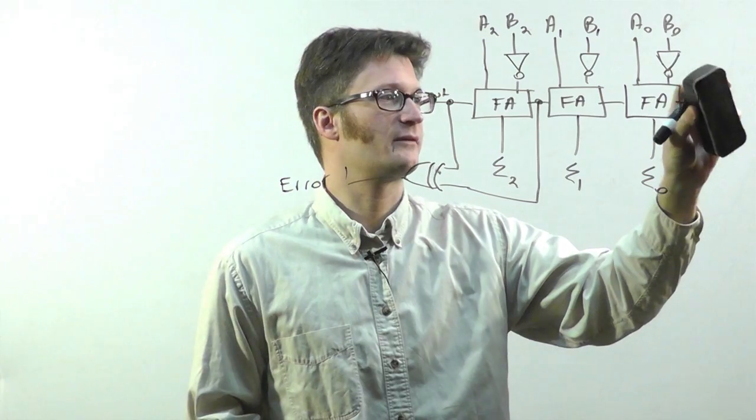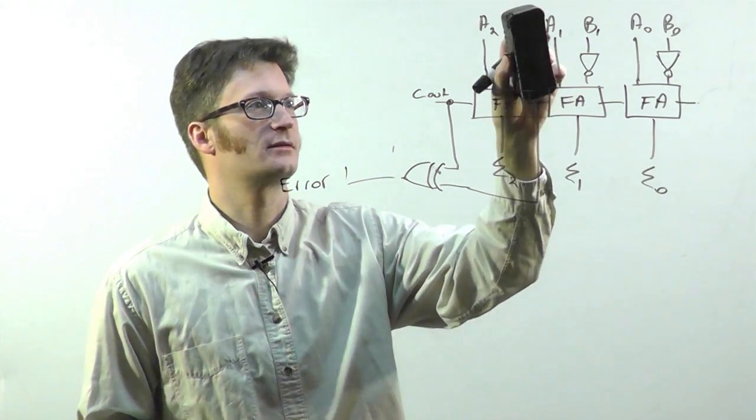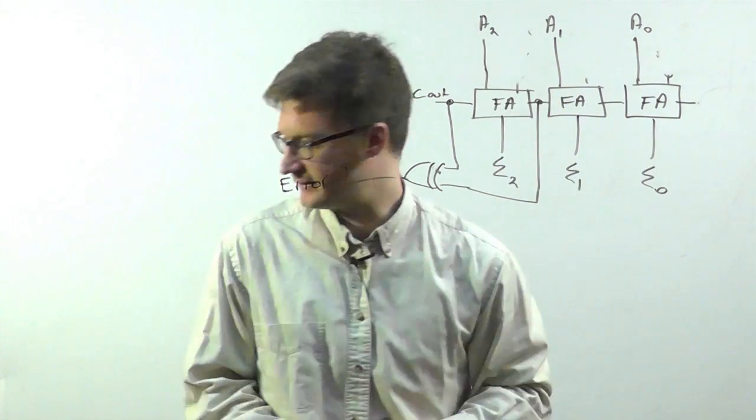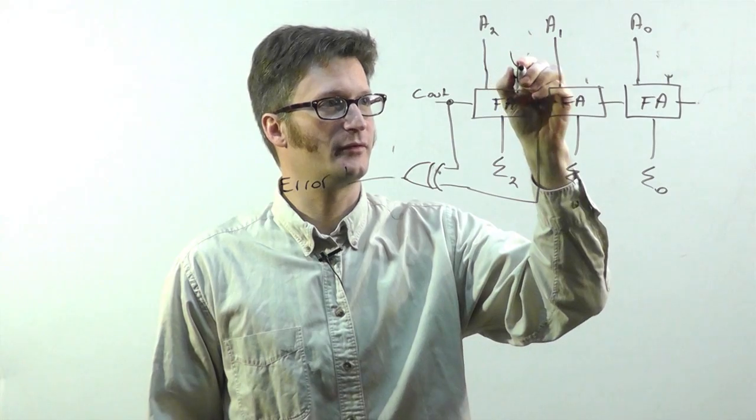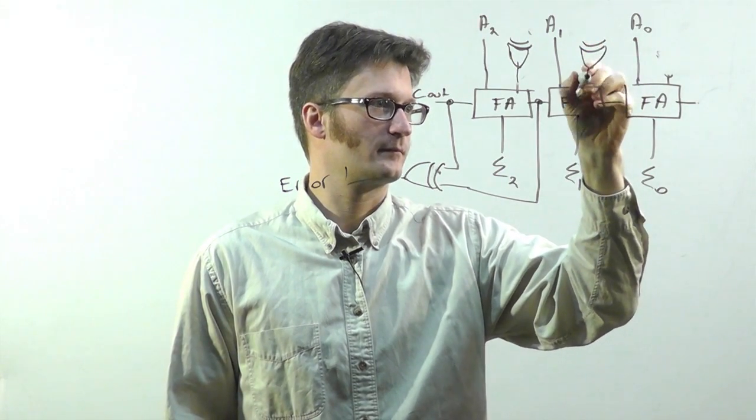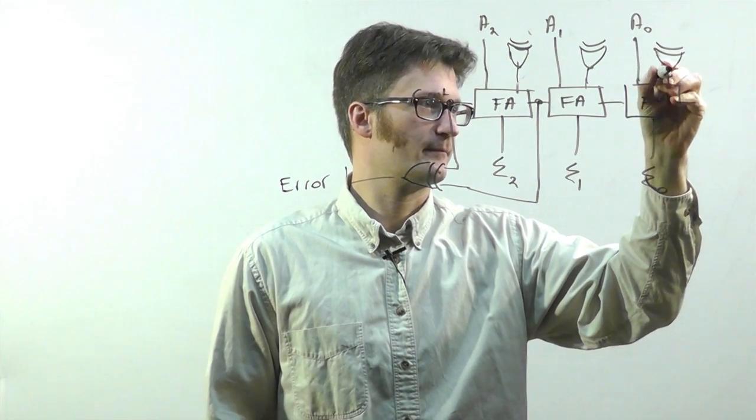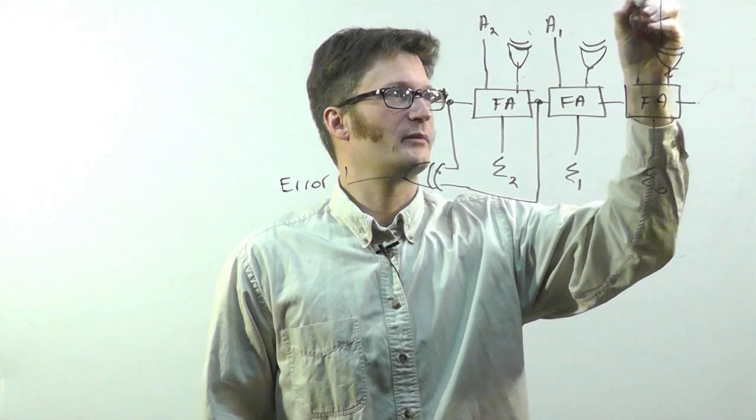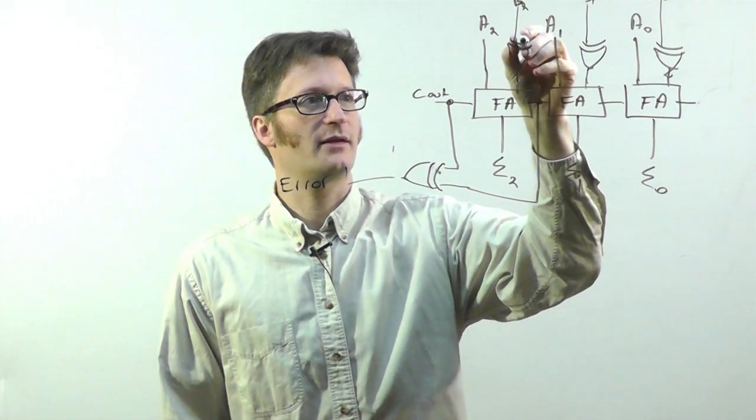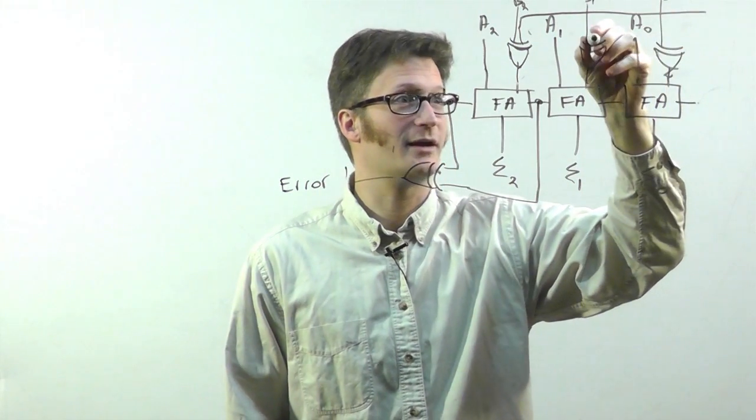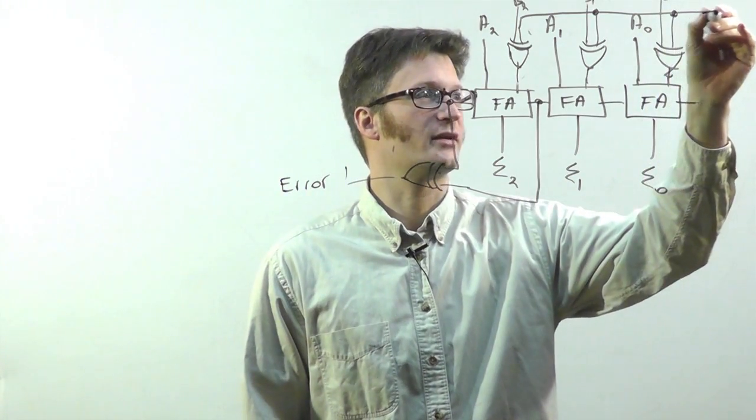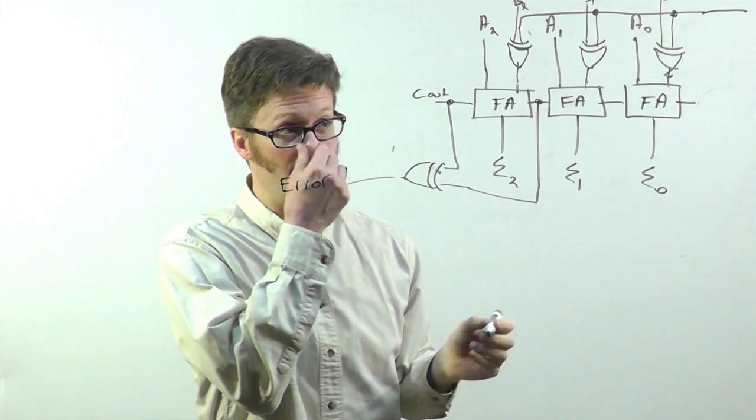Well, let's say we want to convert this into an adder subtractor. In that case, what we're going to do is we take out these invert gates and we stick in instead an exclusive OR. And B comes into one of the inputs. And then to the other input, we have our control signal.